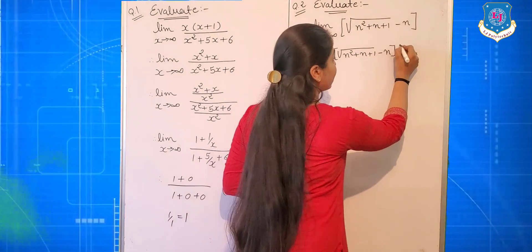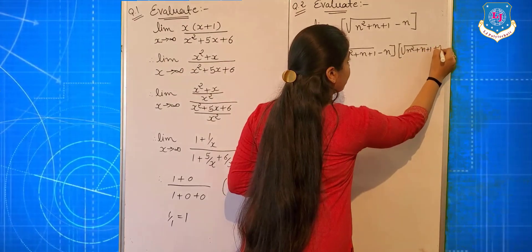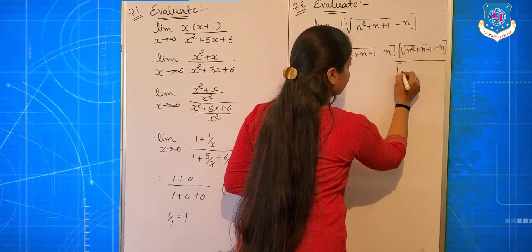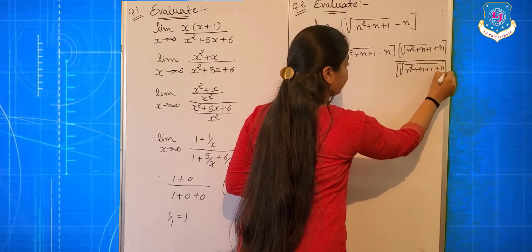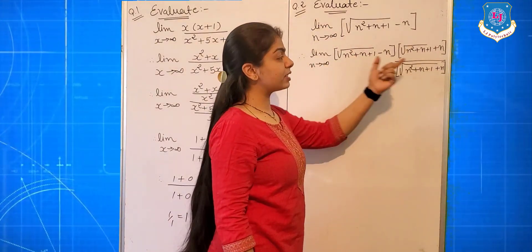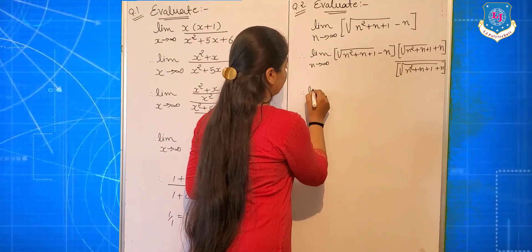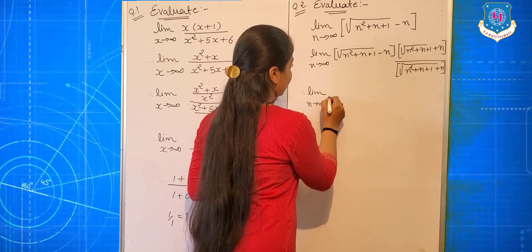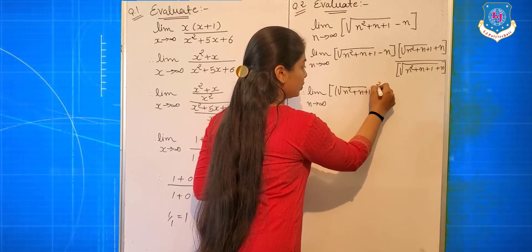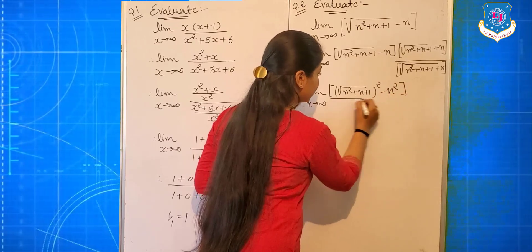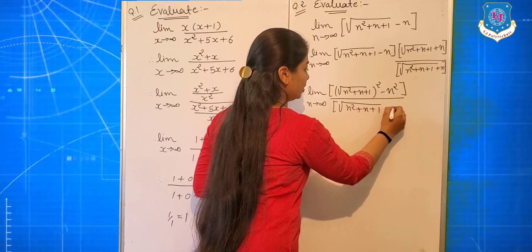Multiply and divide by (√(n² + n + 1) + n). That gives us the (a − b)(a + b) factorization form. Therefore, limit n tends to infinite of [(√(n² + n + 1))² − n²] divided by [√(n² + n + 1) + n], which is (n² + n + 1 − n²) divided by √(n² + n + 1) + n.